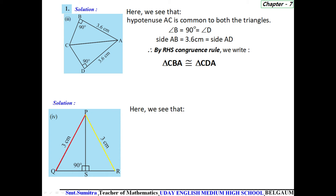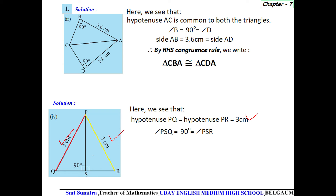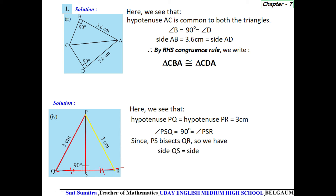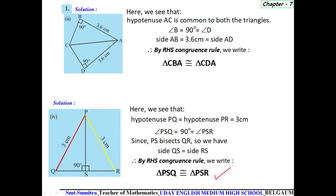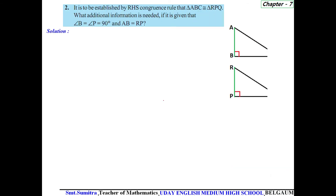Next question: hypotenuse PQ equals hypotenuse PR — both are 3 centimeters. Angle PSQ equals angle PSR — both are 90 degrees. Since PS bisects QR, side QS equals side RS. Therefore, by RHS congruence rule, triangle PSQ is congruent to triangle PSR.